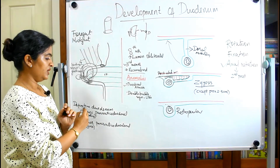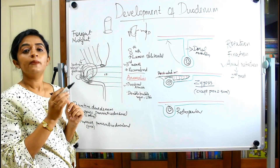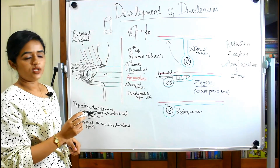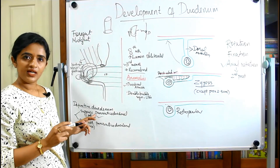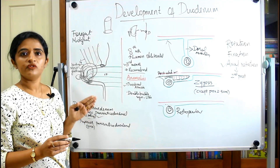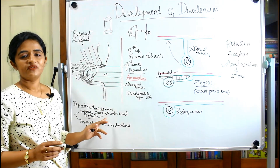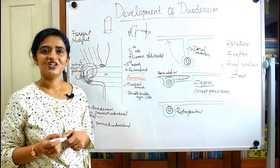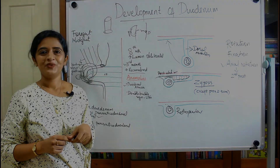Regarding the blood supply of the definitive duodenum, there are two major vessels: the superior and inferior pancreaticoduodenal arteries. The superior pancreaticoduodenal artery is a branch of the celiac artery — the artery of the foregut — and the inferior pancreaticoduodenal artery is a branch of the superior mesenteric artery — the artery of the midgut. Since the duodenum is derived from both the foregut and the midgut, its arterial supply comes from both the foregut artery and the midgut artery. That concludes the development of the duodenum.